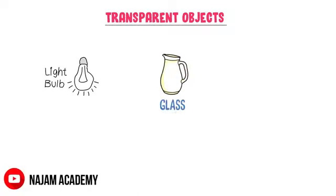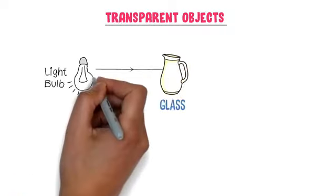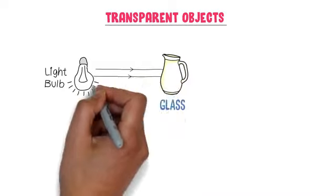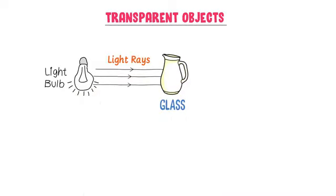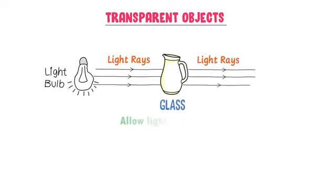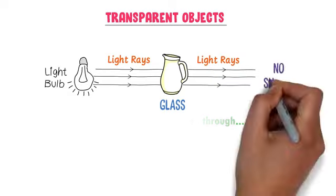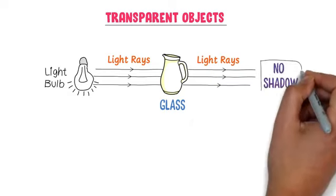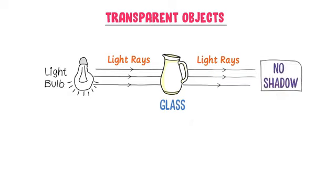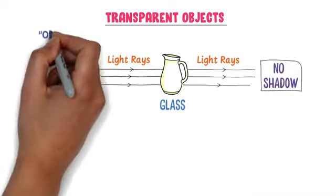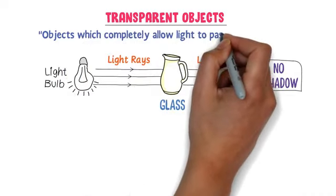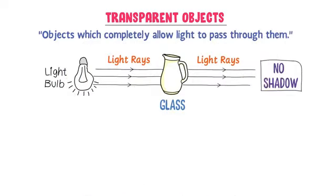I place a glass in front of this luminous object. Now light rays are hitting this glass. On the opposite side of the glass, we can see that all light rays are passing through it, because it allows all light to pass through it and doesn't create any shadow. Therefore, we define transparent objects as objects which completely allow light to pass through them.